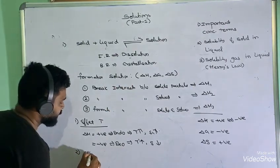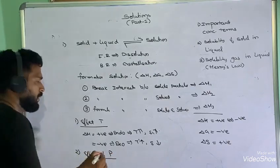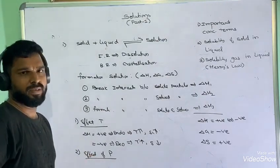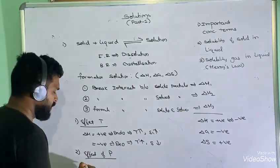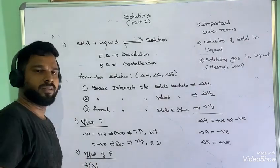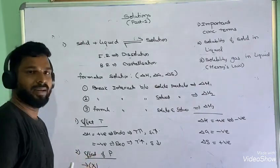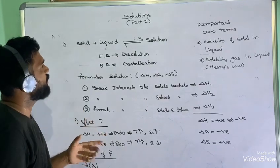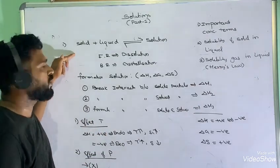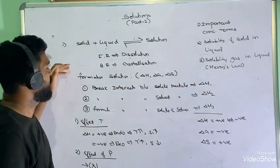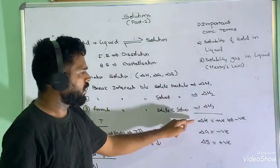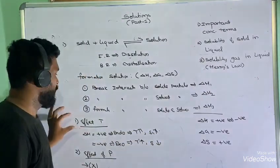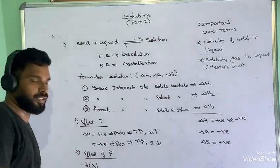Regarding the effect of pressure on solubility of solid in liquid: solids and liquids are almost incompressible, so there is no significant effect of pressure on the solubility of a solid in a liquid. To summarize: forward reaction is dissolution, backward is crystallization, ΔH can be positive or negative, ΔG is negative, and we discussed temperature and pressure effects.